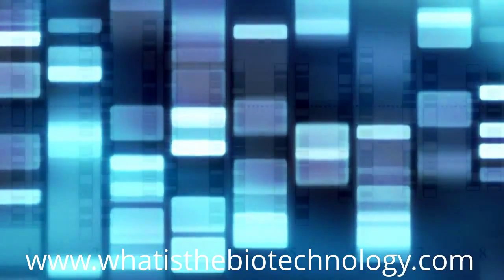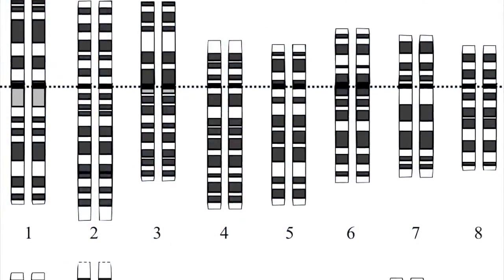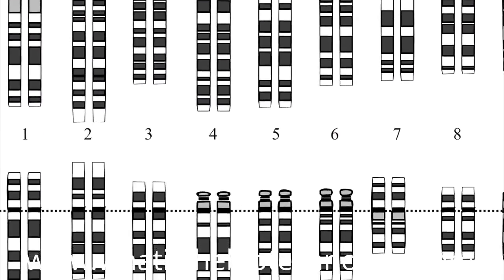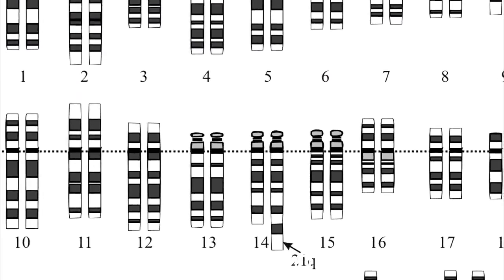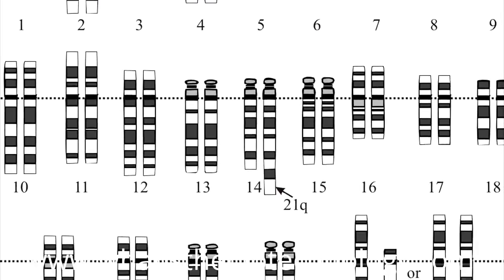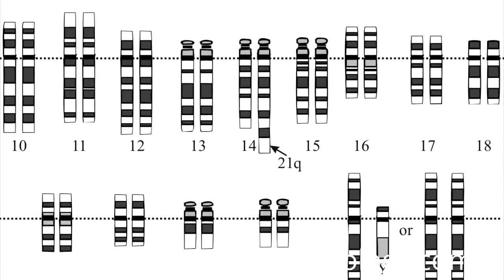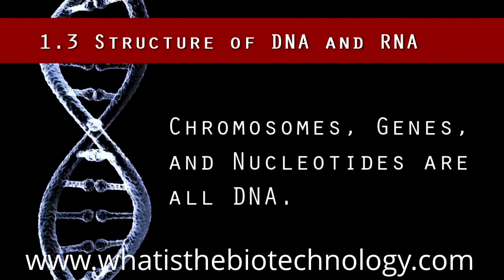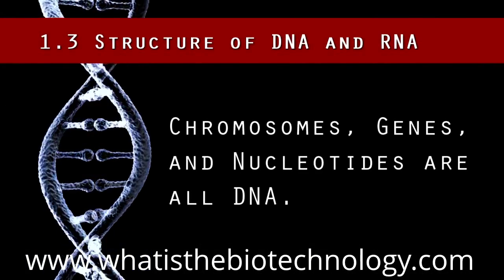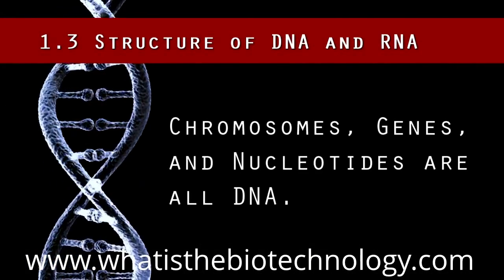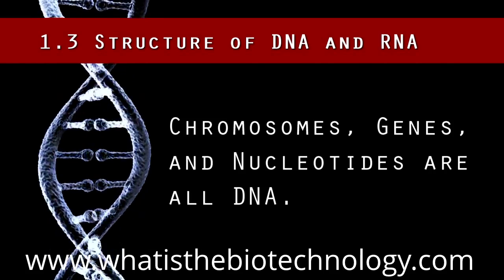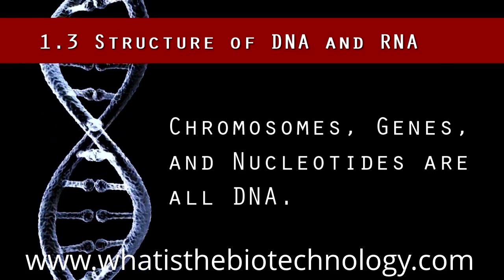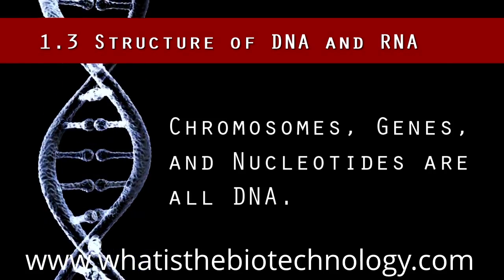These genes are made up of individual DNA units called nucleotides, arranged in a specific sequence unique to each gene. Chromosomes, genes, and nucleotides are all DNA — they are just different levels of organization for the DNA.